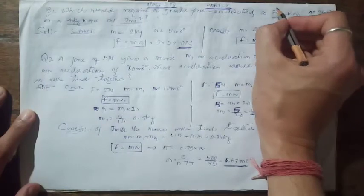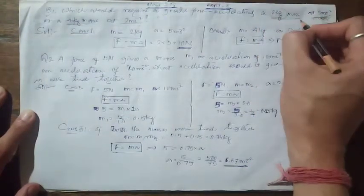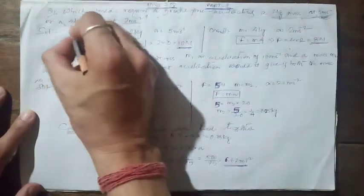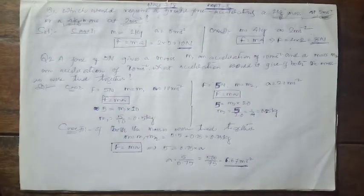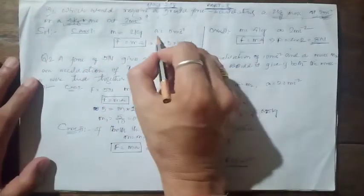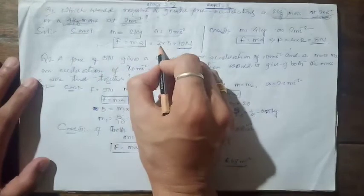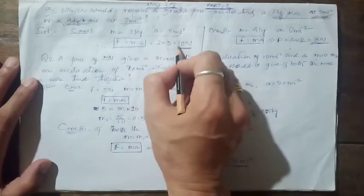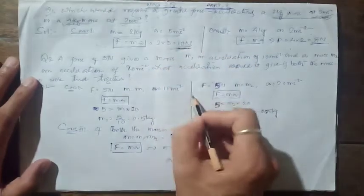To accelerate the 2 kg mass at 5 m/s², we write the given quantities: mass m = 2 kg, acceleration = 5 m/s². Using F = ma, force = 2 × 5 = 10 newton in the first case.